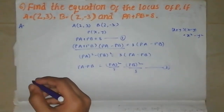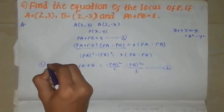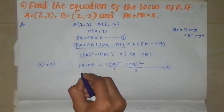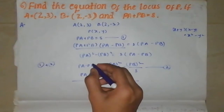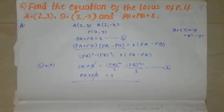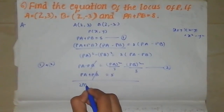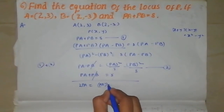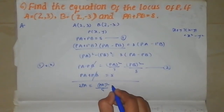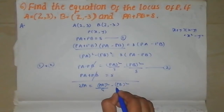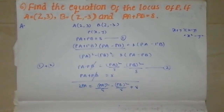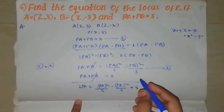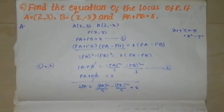Then we have equation 1 and equation 2. From these two equations, PA minus PB cancels, giving us 2PA equal to PA squared by 8 minus PB squared by 8 plus 8. PA and PB are found using the distance formula.